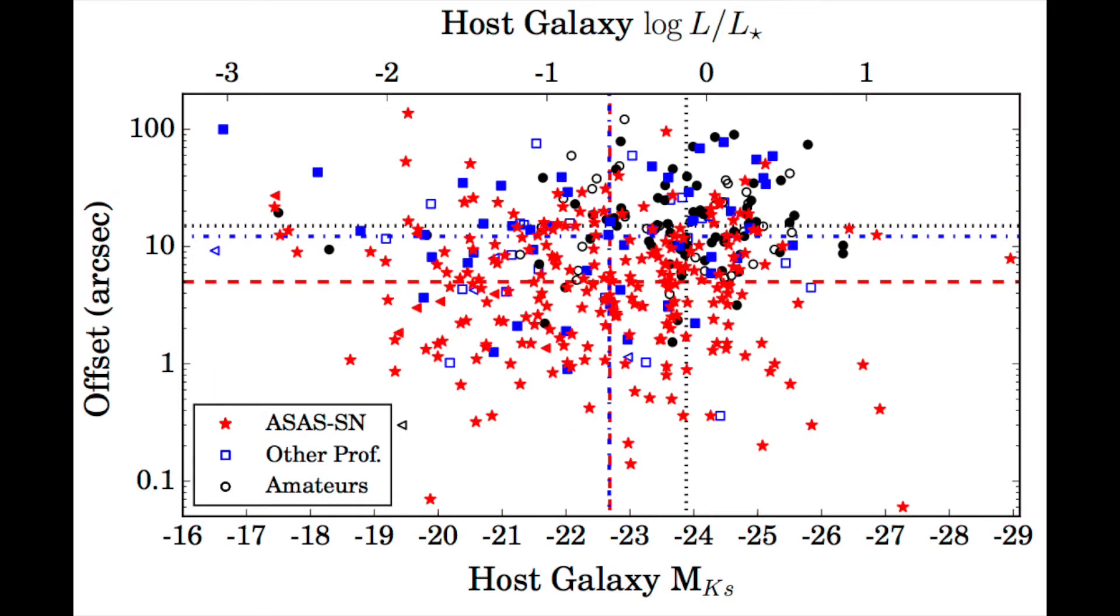The difference between the ASASSIN sample and the supernovae discovered by other observers can be seen clearly when looking at their host galaxies and their offsets from the host nucleus. This plot shows the host galaxy ks-band magnitude and offset from host nucleus for all supernovae in the combined sample.